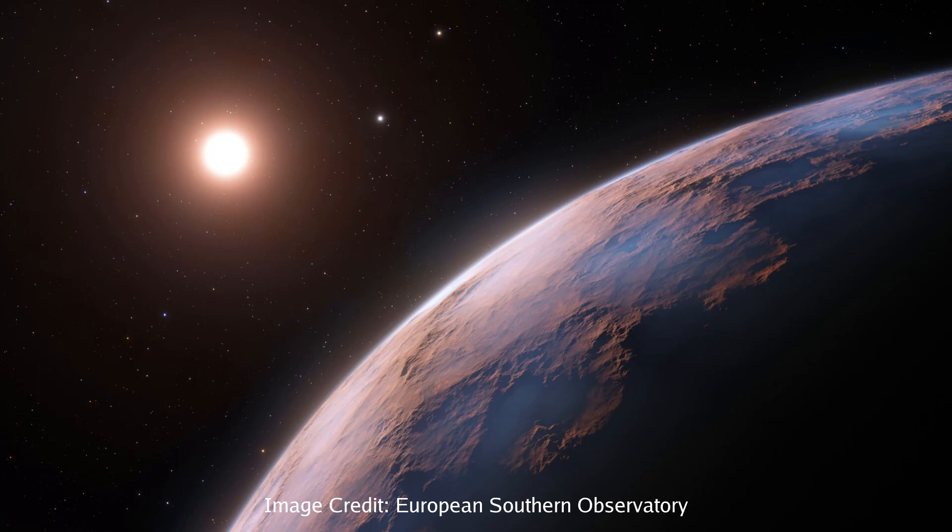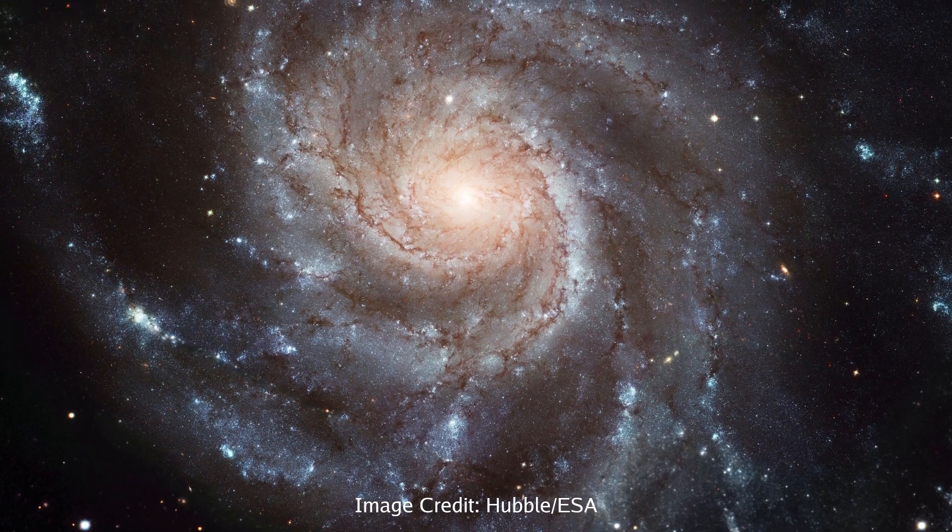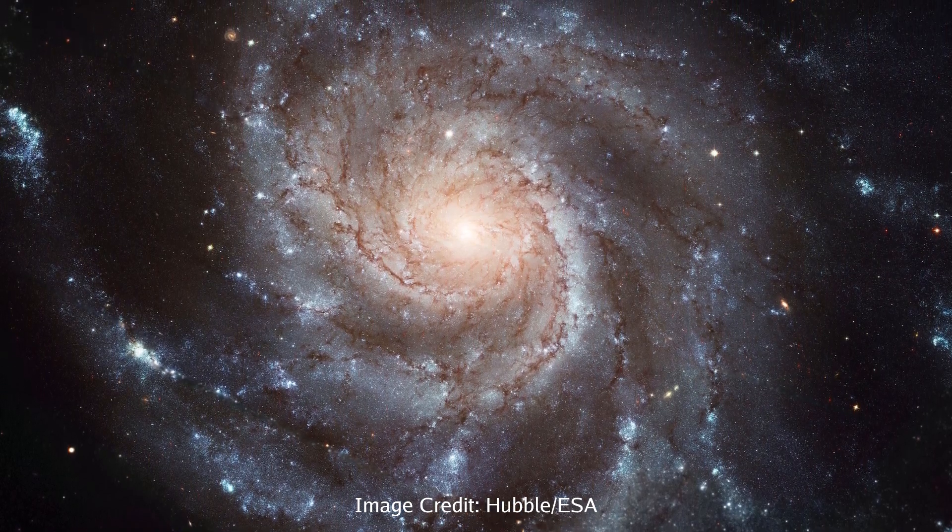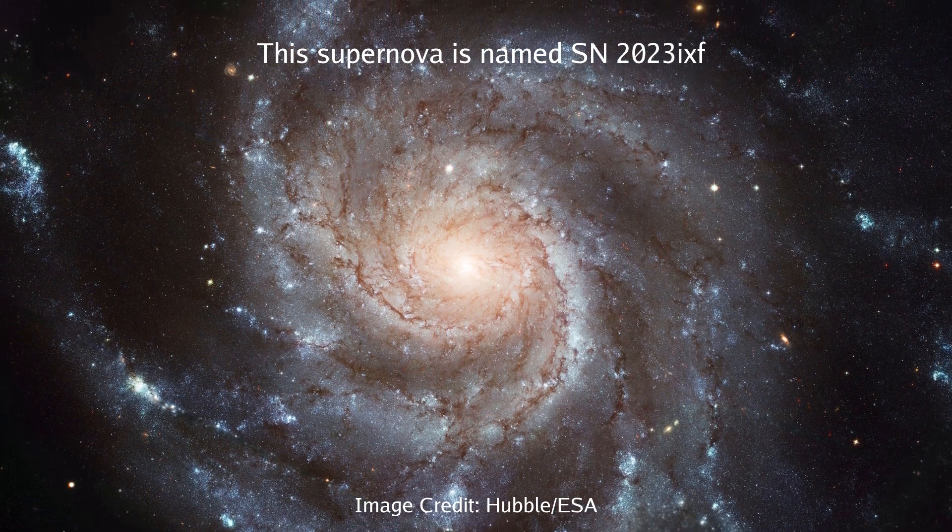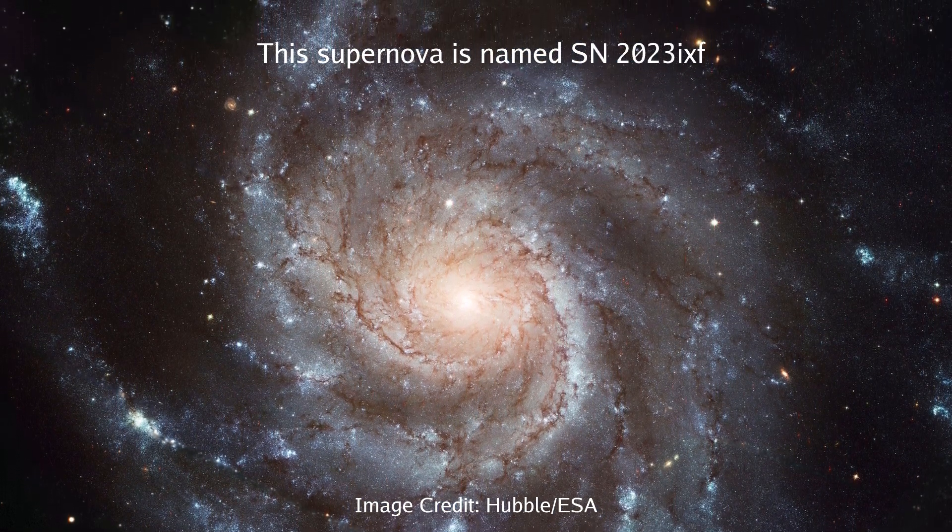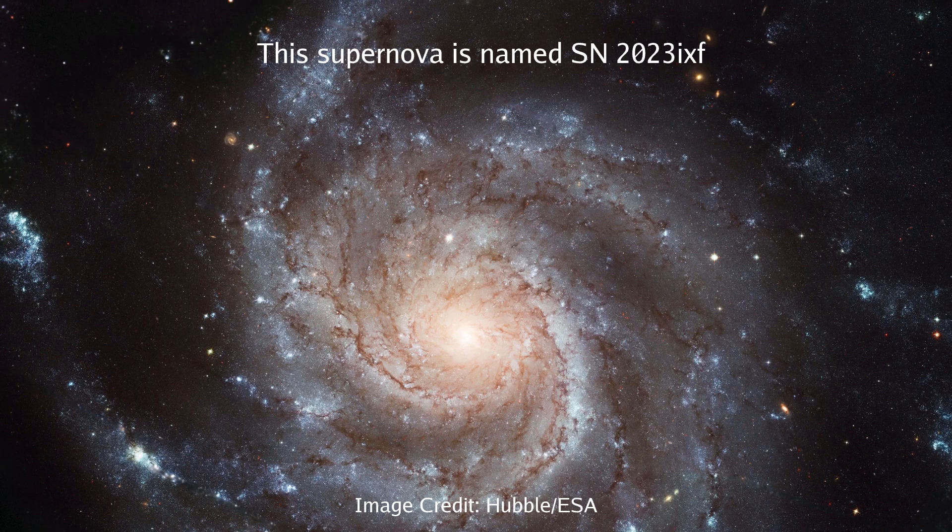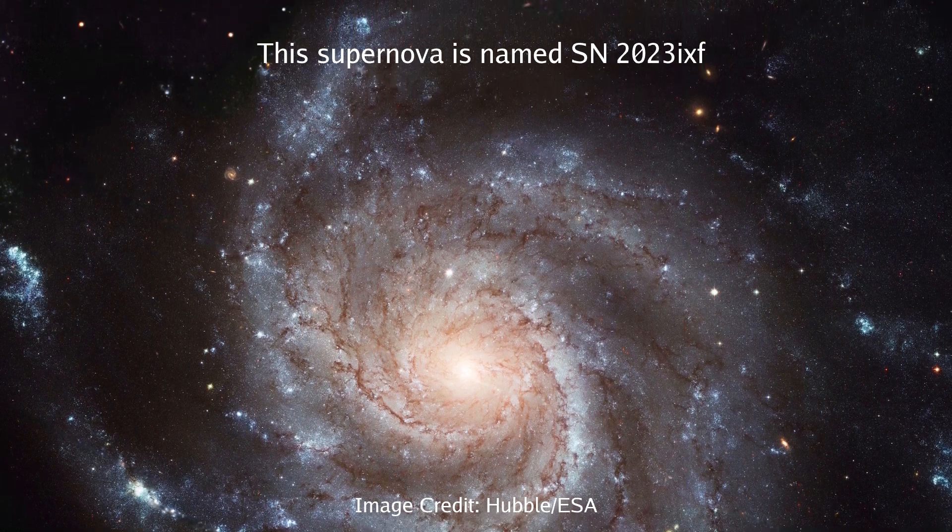Light takes 4.3 years to travel from the nearest star system to us. And the recent supernova in the Pinwheel galaxy actually happened 21 million years ago, because that's how long it took the light to actually travel to us.